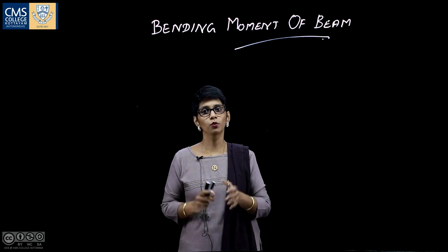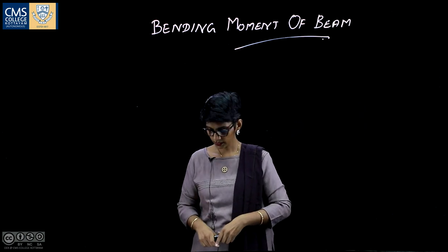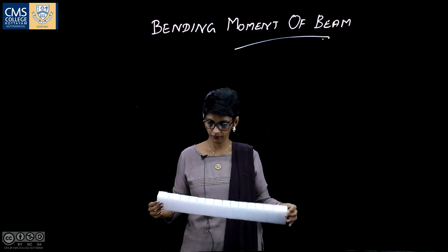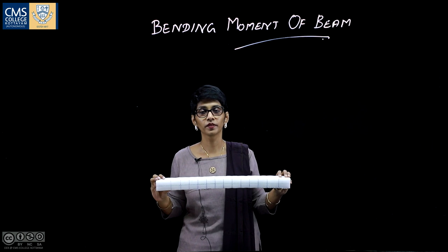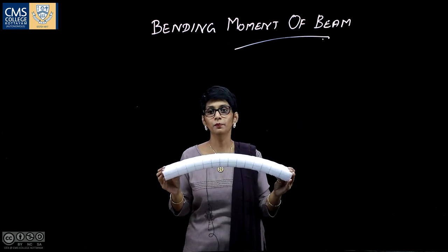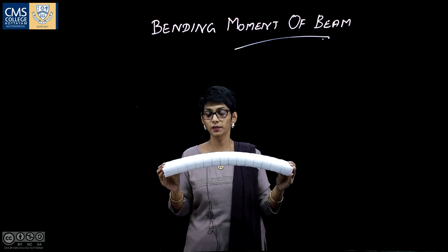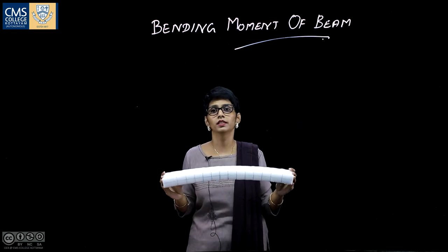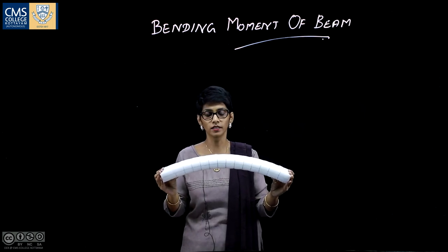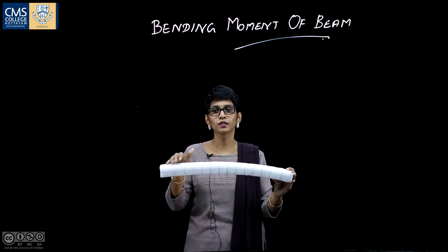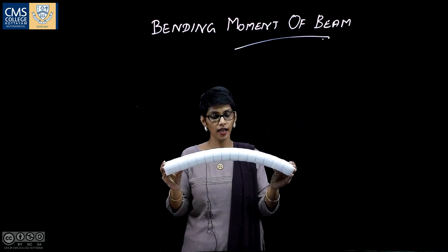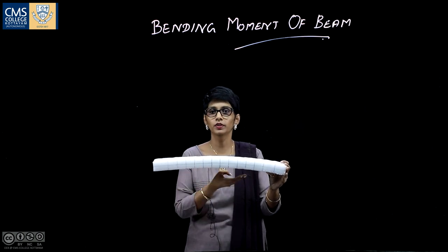When we apply some force to a beam — imagine this to be a beam and we are giving force at its ends — the beam starts bending. It depends upon the elasticity of the material. When the beam bends, in the upper surface you see lengthening of the layer, and in the lower surface you can see the shortening of the layer.